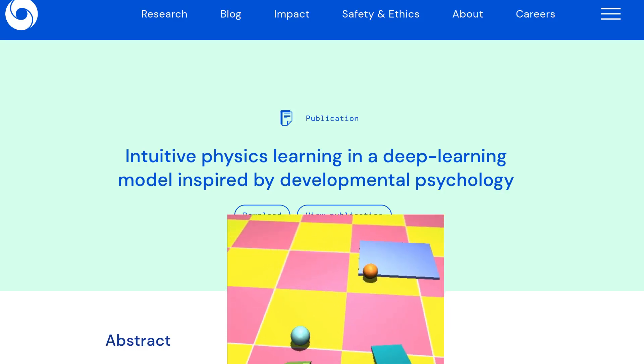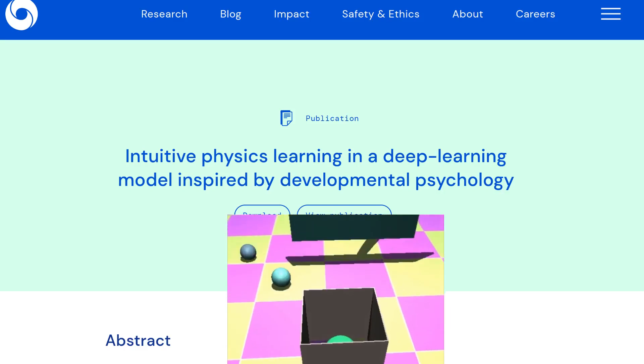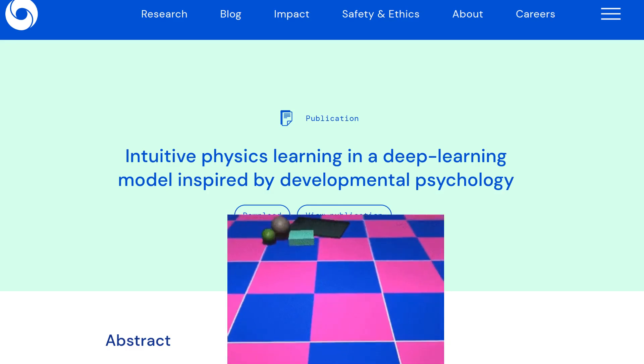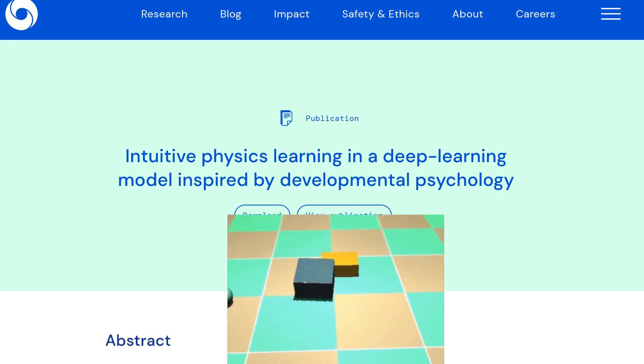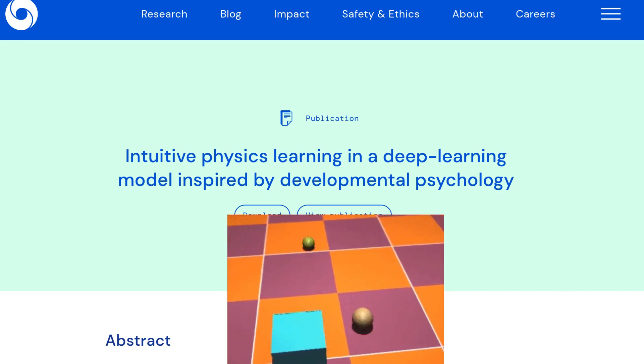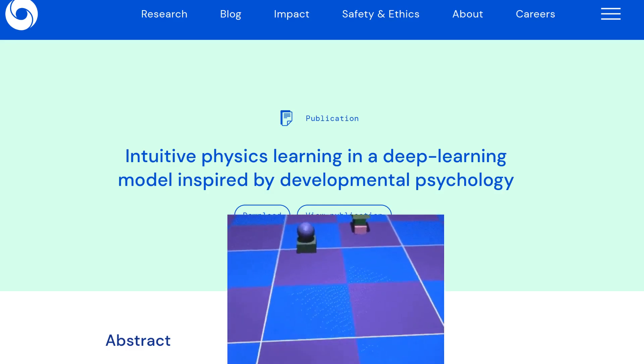Hi there. DeepMind has just released a new AI that learns an intuitive model of physics by watching simulated environments. And then they test this internal model of the AI by showing it possible and impossible videos.